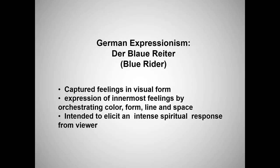Die Blaue Reiter was formed in 1911 in Munich as a loose association of painters led by Russian immigrant Wassily Kandinsky and German native Franz Marc. They shared an interest in abstract forms and the colors of the rainbow — so-called prismatic colors. They felt that these colors had spiritual values that could counteract the corruption and materialism of their age. This is really a much more hopeful group than the one we just saw.